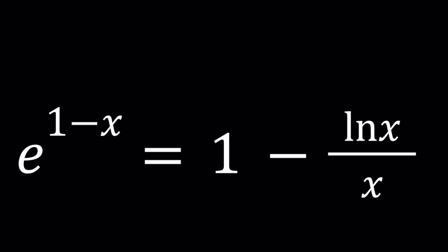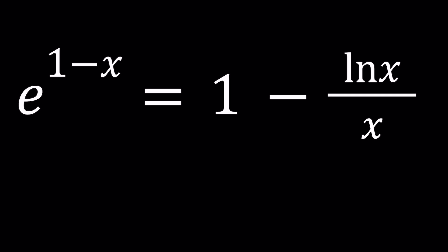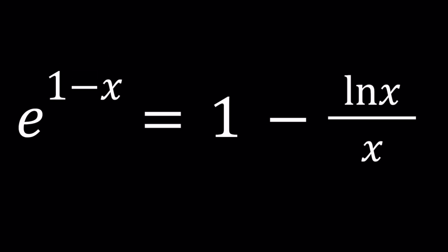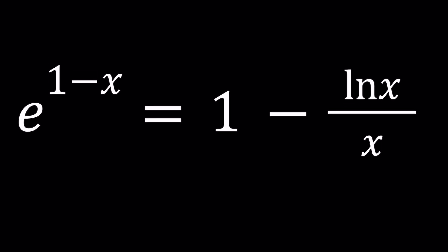First of all we're going to multiply both sides by x to get rid of the fraction. So multiplying both sides by x gives us x times e to the power 1 minus x equals x minus ln x. Of course we need to make sure x does not equal 0 when we do that, but don't worry because x cannot be 0 and x actually has to be positive if we are talking about real solutions.